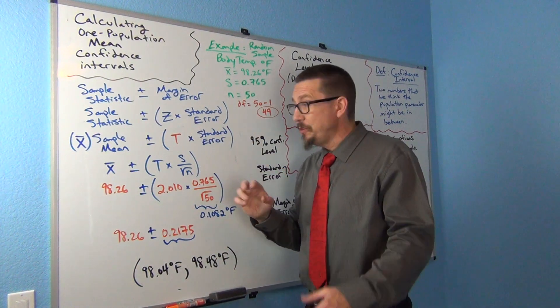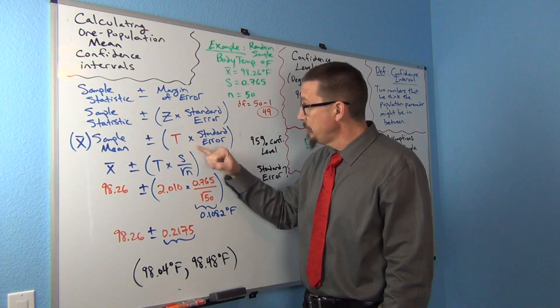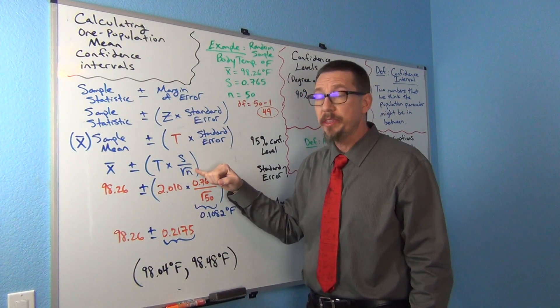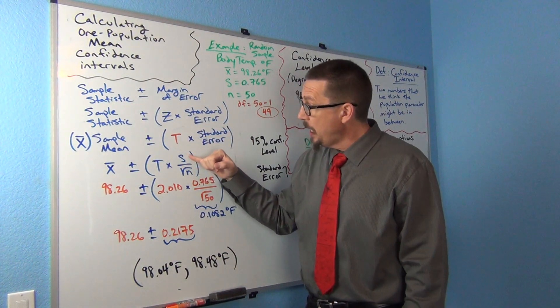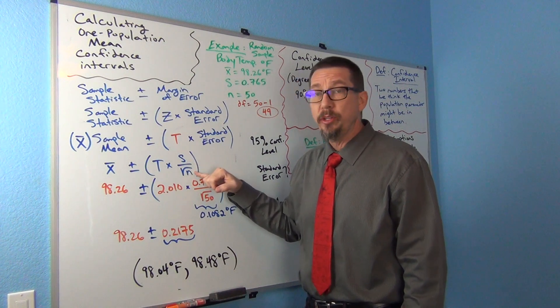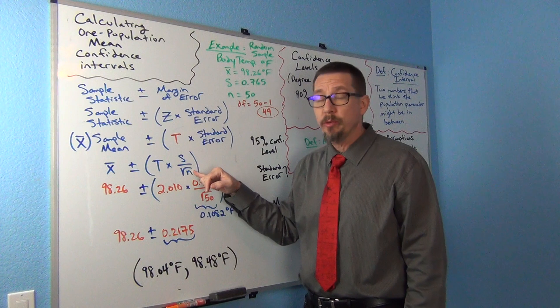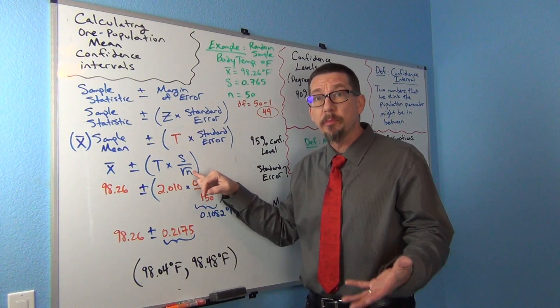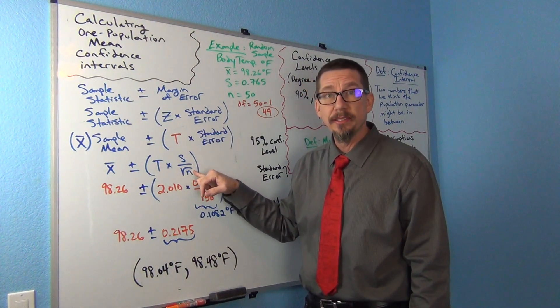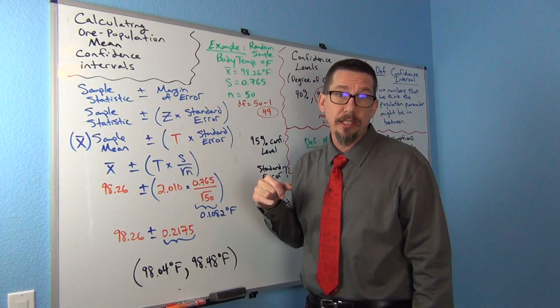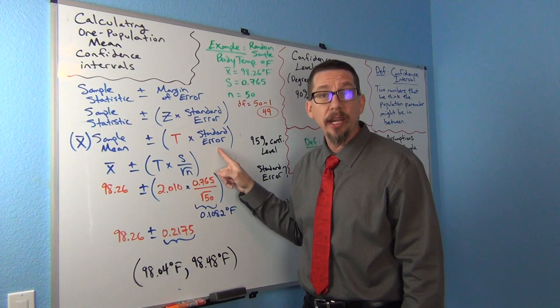Before computers were invented, statisticians had to come up with a way of estimating standard errors. So the formula they came up with, which actually works really well, is s over the square root of n. So standard deviation of the one data set divided by the square root of n, where n is how many numbers are in your data set, the sample size. Surprisingly, this formula is used in a lot of computer programs to this day to estimate standard error.